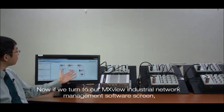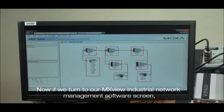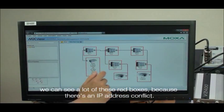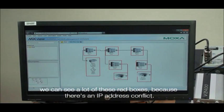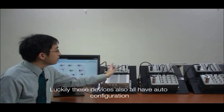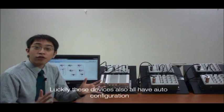And if we turn to our MXView industrial network management software screen, we can see a lot of these red boxes and that's because there's an IP address conflict. But luckily, these devices also all have auto configuration.